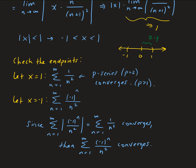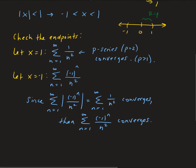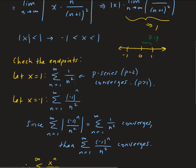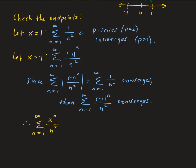It turns out that this series converges at both endpoints. So it converges between the values of negative 1 and 1, where both minus 1 and 1 are included. The radius of convergence is 1.